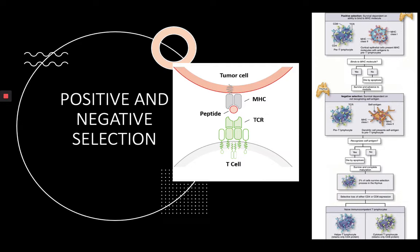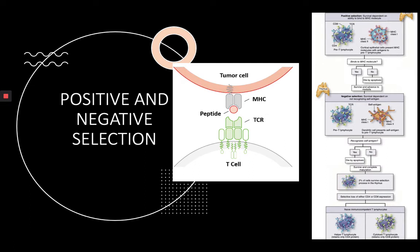How does the T cell recognize self from non-self? This happens in the thymus through a two-stage selection process, as you can see in the picture. The first stage is positive selection: a T cell is exposed to MHC complexes, and if it binds to an MHC complex it will survive — meaning it can recognize the complex. If it doesn't bind, it will die. From positive selection you get T cells that recognize MHC complexes.